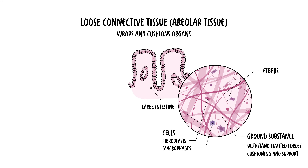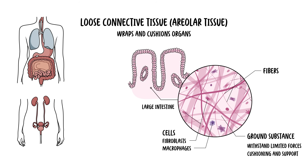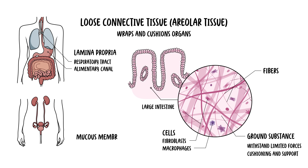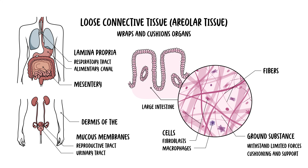Its composition is a balanced mix of cells such as fibroblasts and macrophages. All three fibers are found along with the ground substance, creating a loosely organized, flexible mesh that can withstand limited forces, but is primarily designed for cushioning and support. Examples include the lamina propria of the alimentary canal and respiratory tract, mucous membranes of the reproductive and urinary tracts, the glands, the mesentery, and the dermis of the skin.